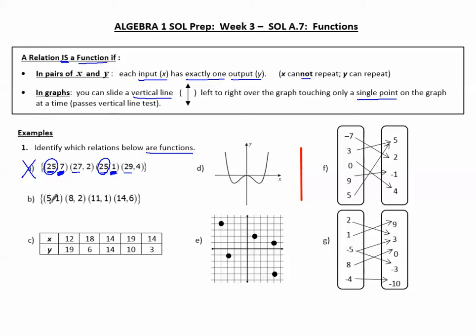In B, I'm looking at all the x's, and I see that they are all different — this is a function. Again, but in a table, I'm looking at the x's. I notice that here the x is 14, and again the x is 14, going with two different y values. Therefore, this is not a function.